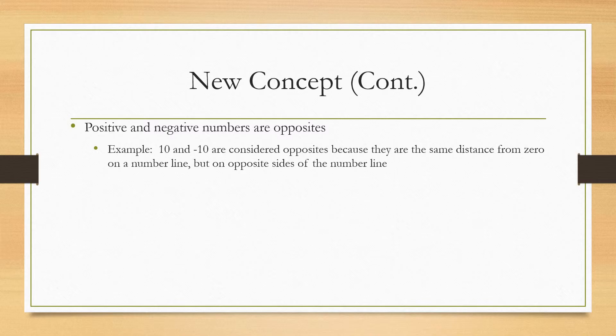10 would be on the right side of zero. Negative 10 would be on the left side of zero, but they're both 10 places away from zero, so those are considered opposites of each other.